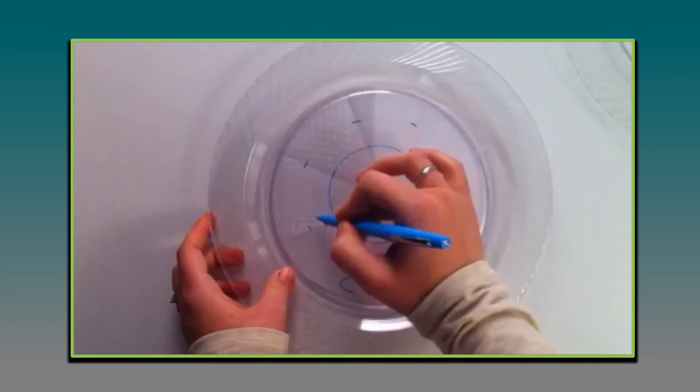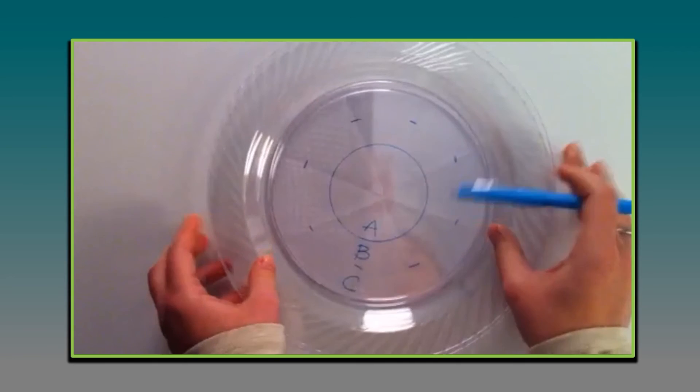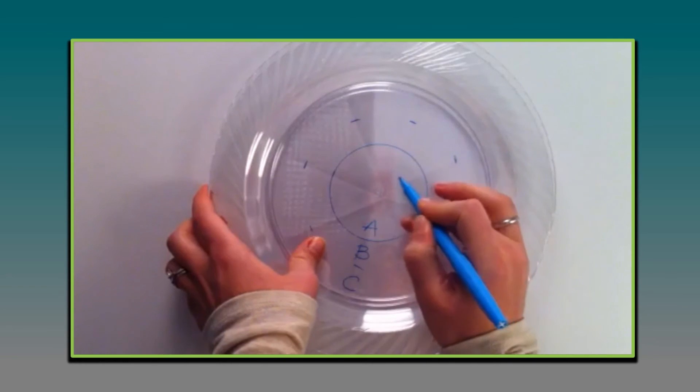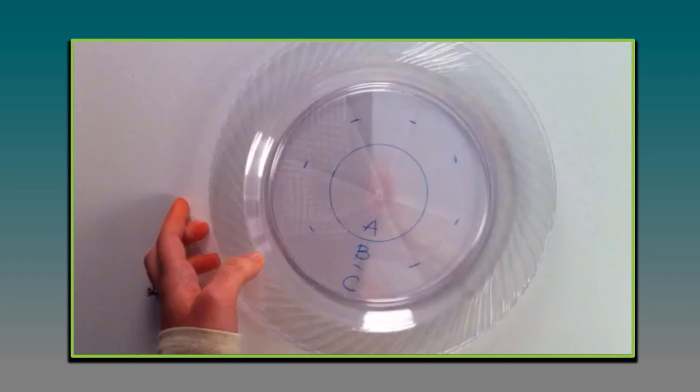Then place another plate on top and repeat it with the middle layer of numbers or letters or words and then put the third plate down and write the innermost circle of information onto that plate. And then make sure you're spinning them as you go so that you don't give away the answer by the direction of the writing. All the numbers or wording should be facing the outside of the plate.